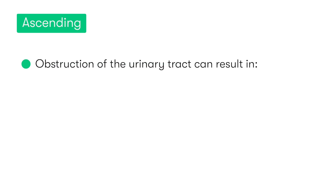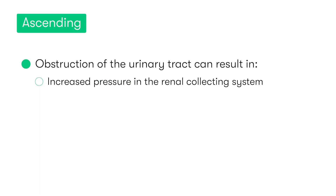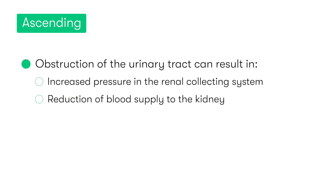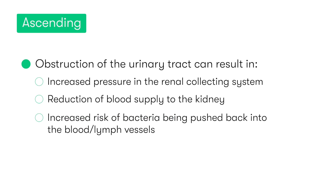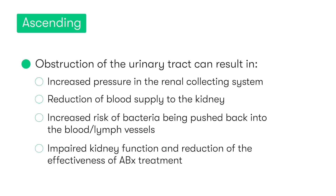Having an obstruction of the urinary tract can complicate things even further, as the blockage can result in increased pressure within the renal collecting system. This can potentially reduce blood supply to the kidneys and also increases the risk that bacteria are pushed back into the blood or lymph vessels, causing the patient to become systemically unwell. Additionally, since the blockage affects kidney function, it becomes harder to treat the infection with antibiotics, which normally rely on excretion into the urine to be effective against the bacterial infection.